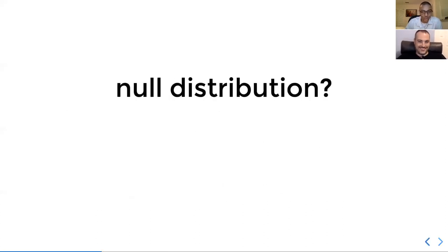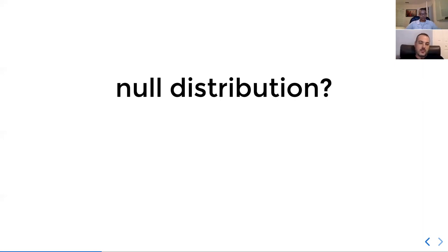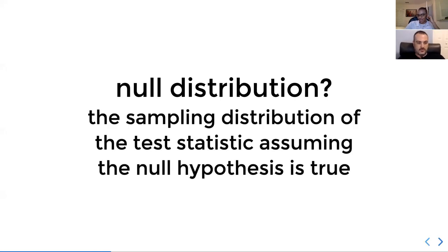What is the null distribution? They define it as a simulation where you assume there's no effect — your explanatory variable is not affecting the outcome, so you can shuffle it. By shuffling a bunch of times and sampling that effect size, you get a distribution of effects from that null. It's the sampling distribution of the test statistic, assuming that the null hypothesis is true.